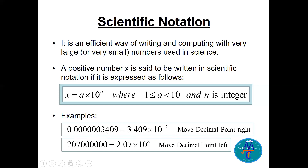Why do I stop at 3.4 and not 34? Because of the rule: a must be between 1 and less than 10. So 3.4 is valid, but 34 is bigger than 10. When you move the decimal point to the right, you put a minus in the power — meaning this is a very small, tiny number.